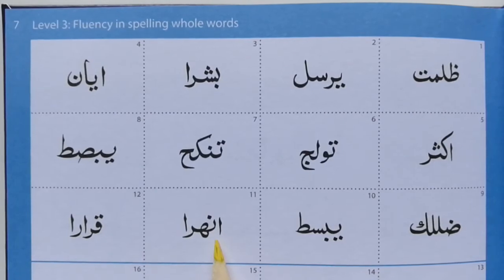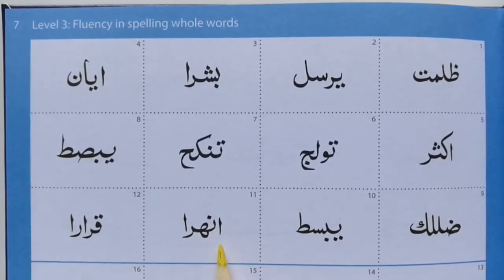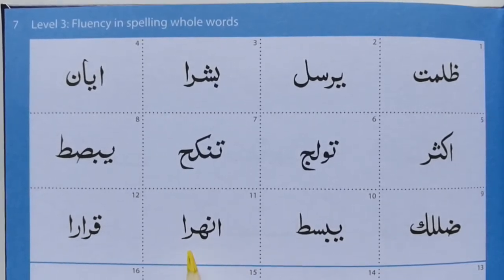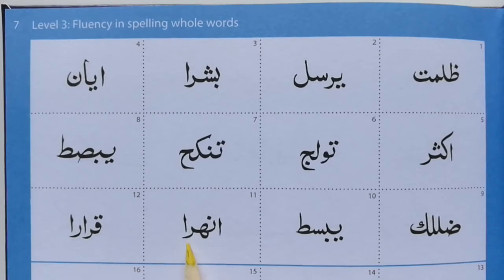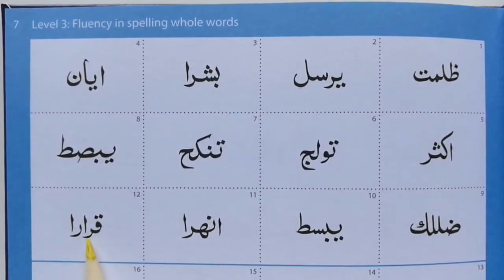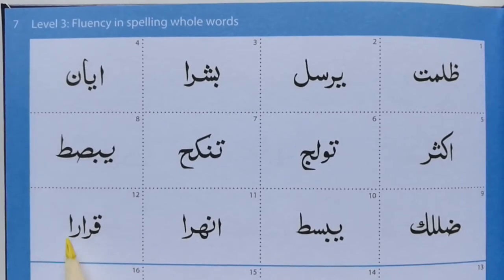Here we're moving on to five-letter words. Alif, Noon, Haa, Ra, Alif. Qaf, Ra, Alif, Ra, Alif.